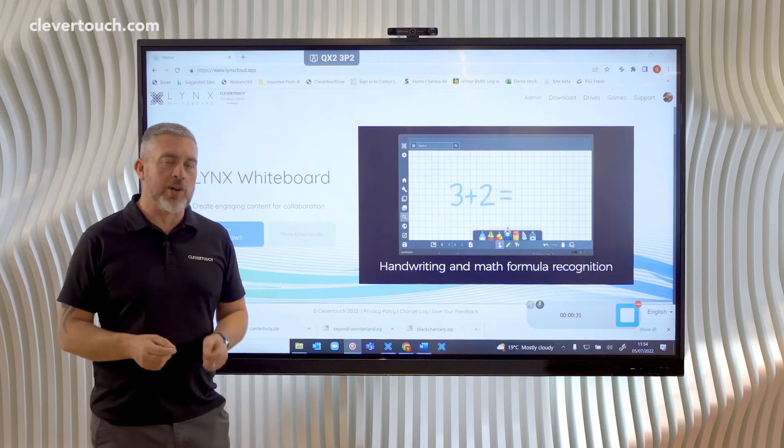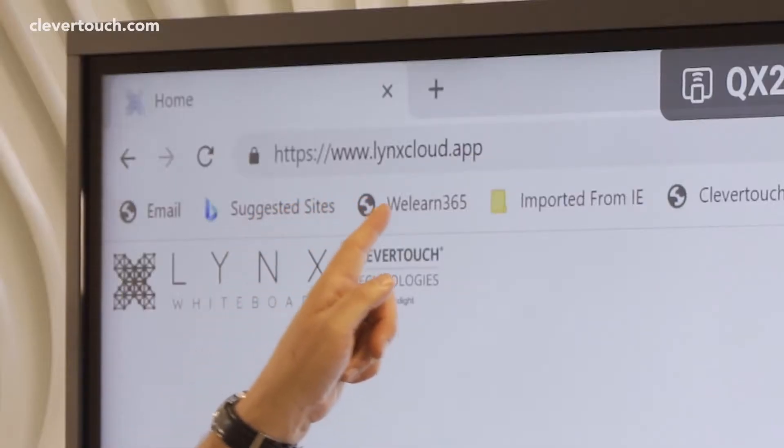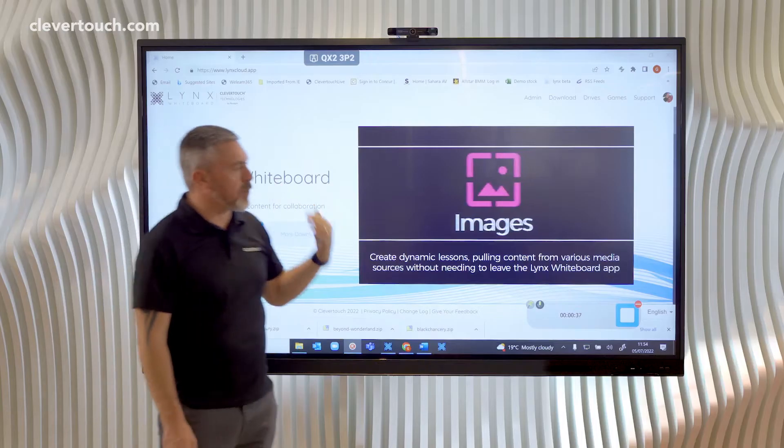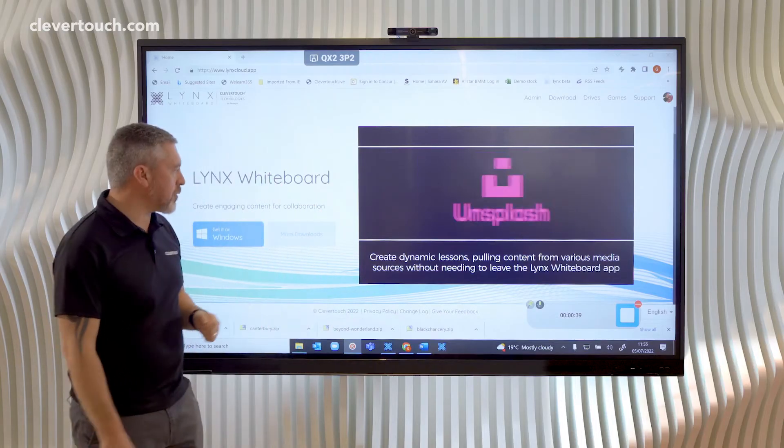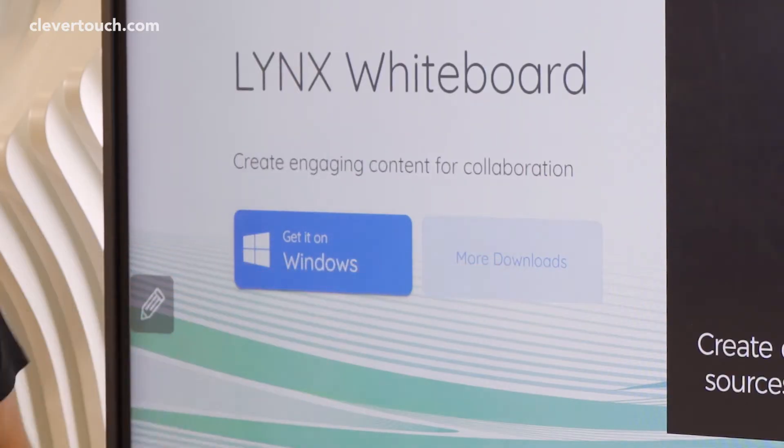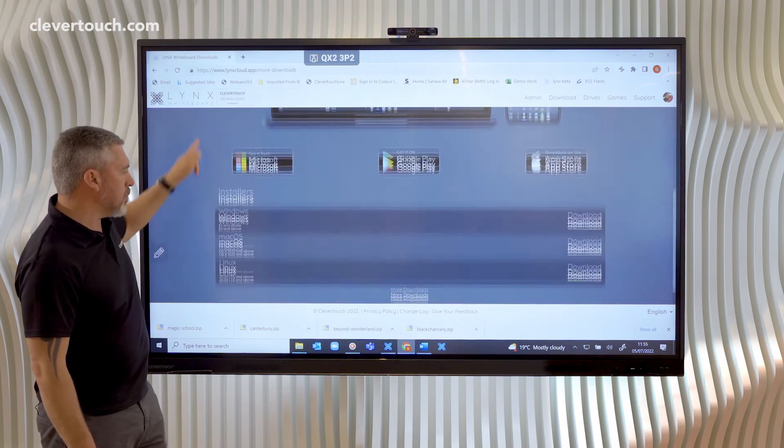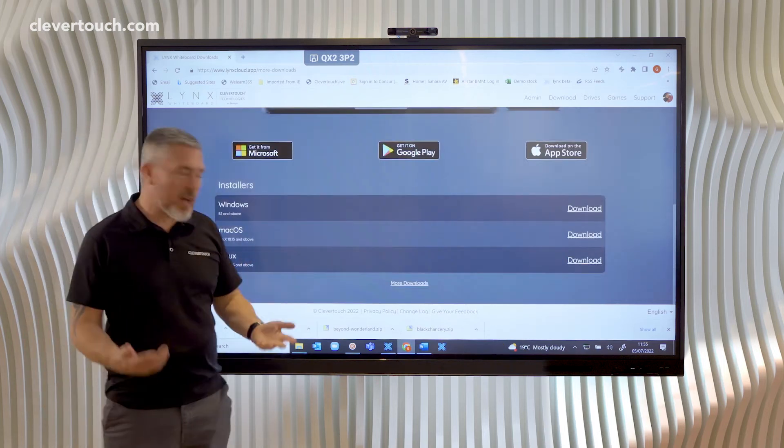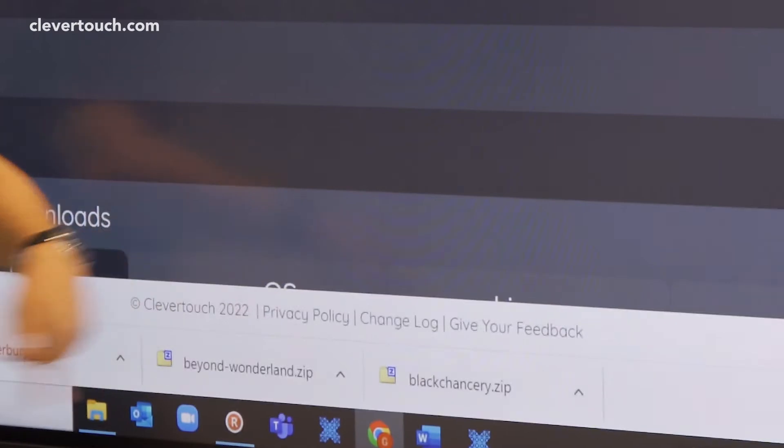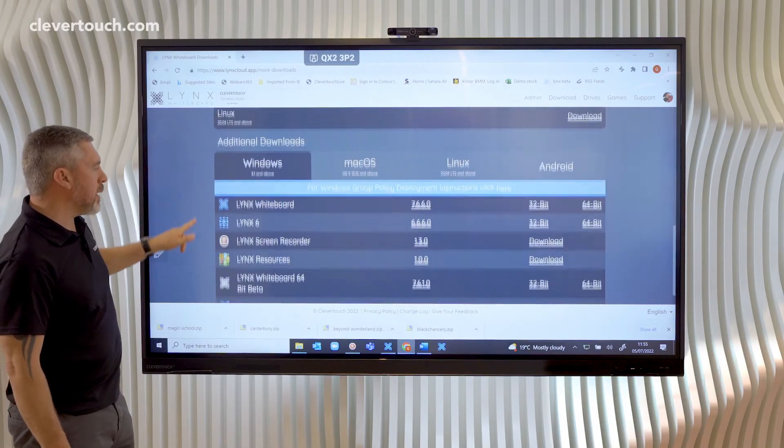First of all, I'm going to show you where you can get this really great app from. I'm on Links Cloud App, which is the website where you manage your Links Whiteboard account, and there's an area called More Downloads. If I scroll down, hidden away is another area called More Downloads, an additional downloads area pops up.